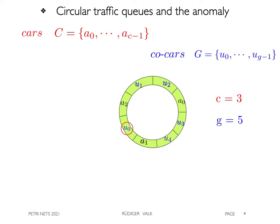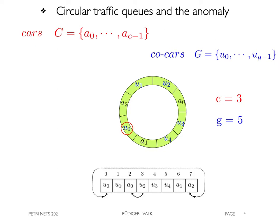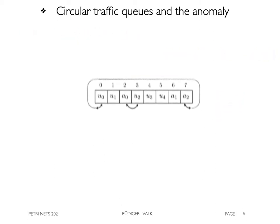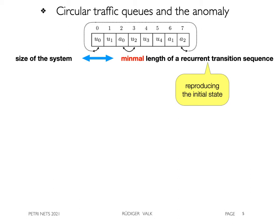We present a circular traffic queue also in linear form. The size of a system is strongly connected with the length of a recurrent transition sequence, which reproduces the initial state.